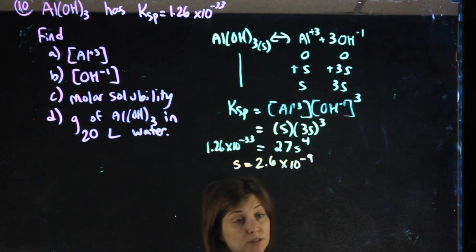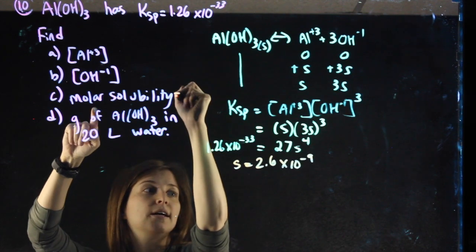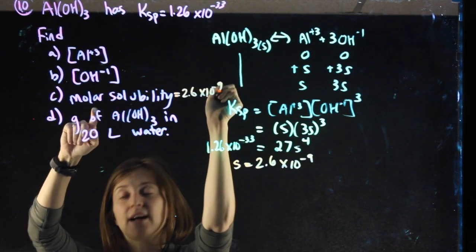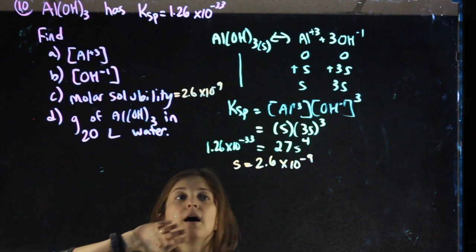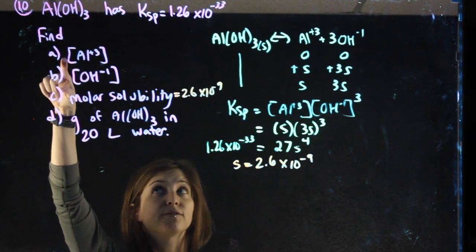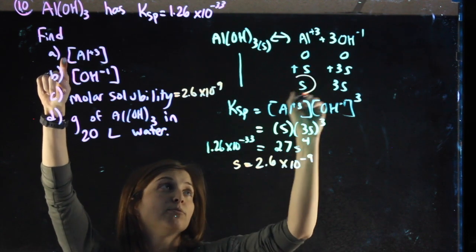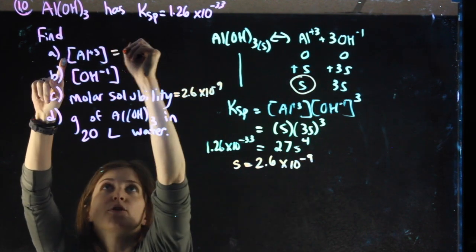That's the work, most of the work for A, B, and C. So my answer to C, molar solubility, is just S, is 2.6 times 10 to the negative 9. The concentration of aluminum ions, the concentration of hydroxide ions. Well, it says aluminum should just be S, so it's also the same thing.